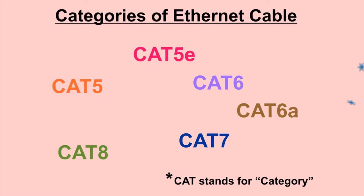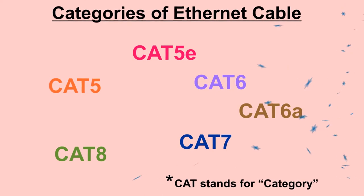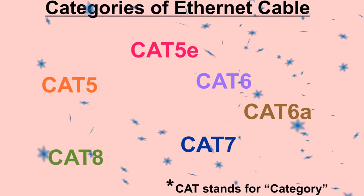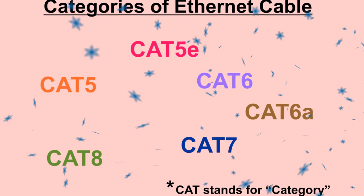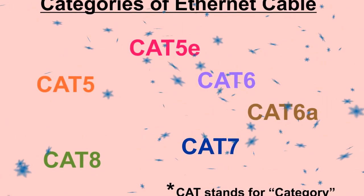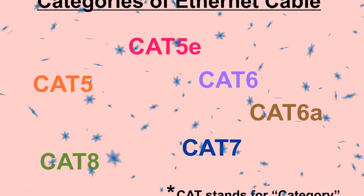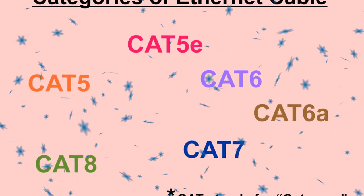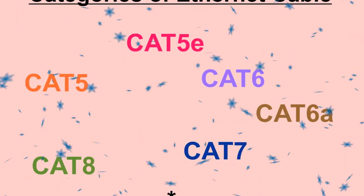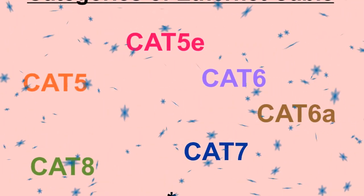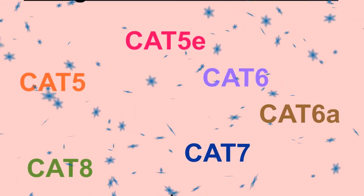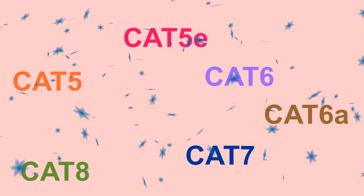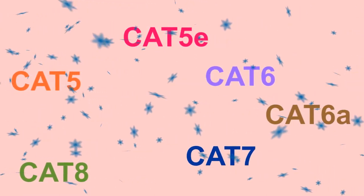Ethernet cables are further classified into various categories based upon their capacities to handle speeds, bandwidth, and crosstalk. These categories are Category 5, Category 5e, Category 6, Category 6a, Category 7, and Category 8. Out of these, Cat5 is almost obsolete and is rarely used nowadays. Cat5e is currently the minimum recommended standard.